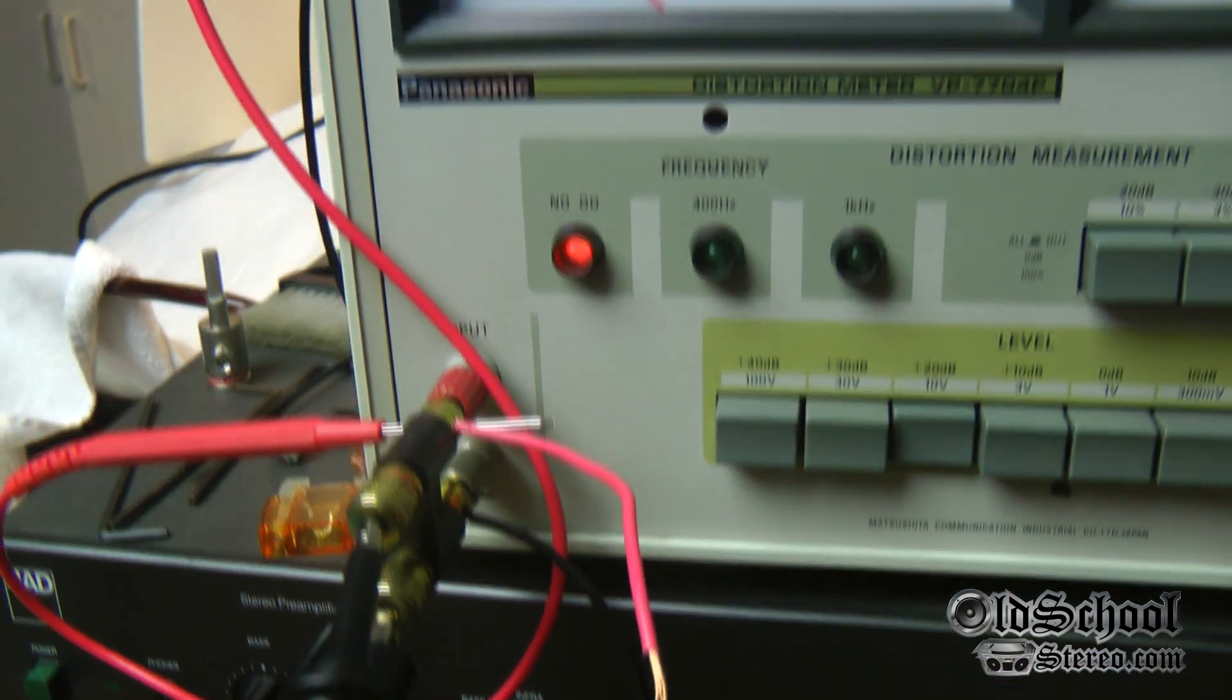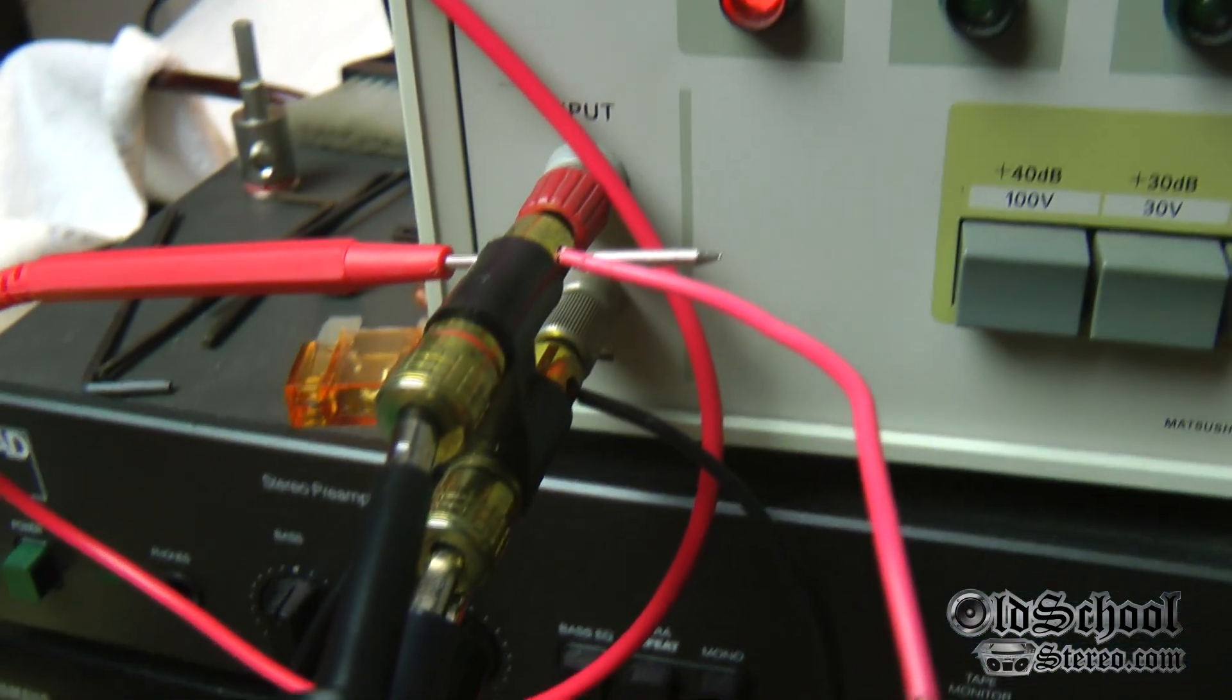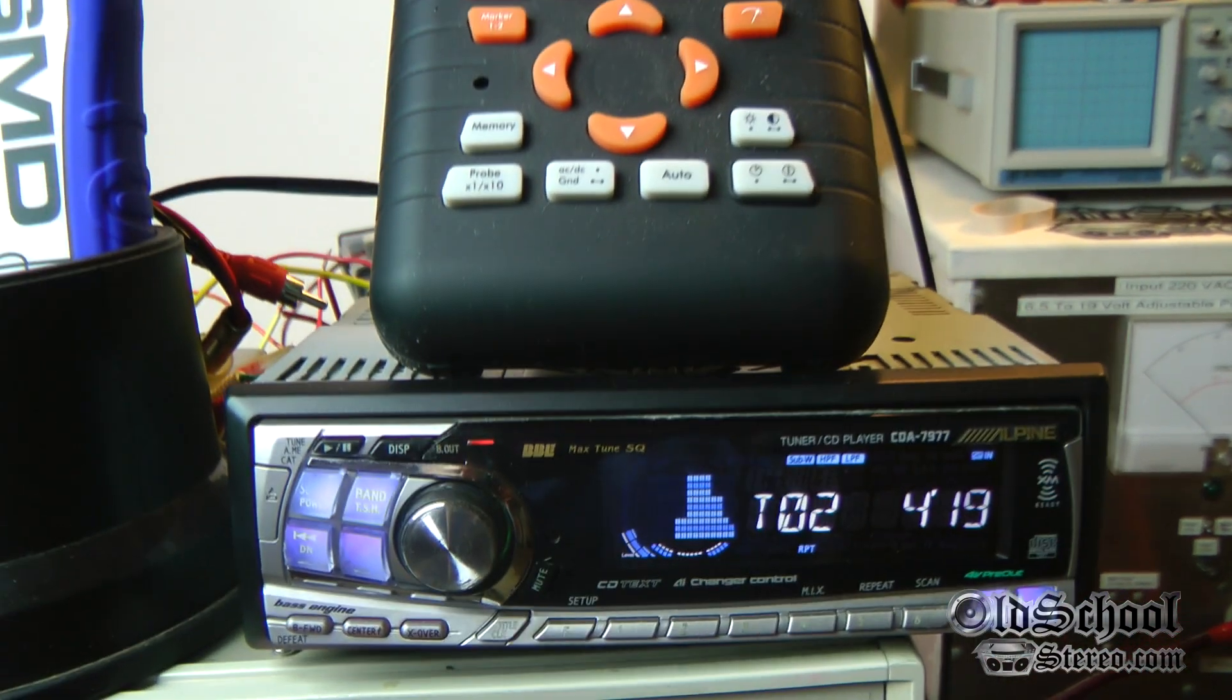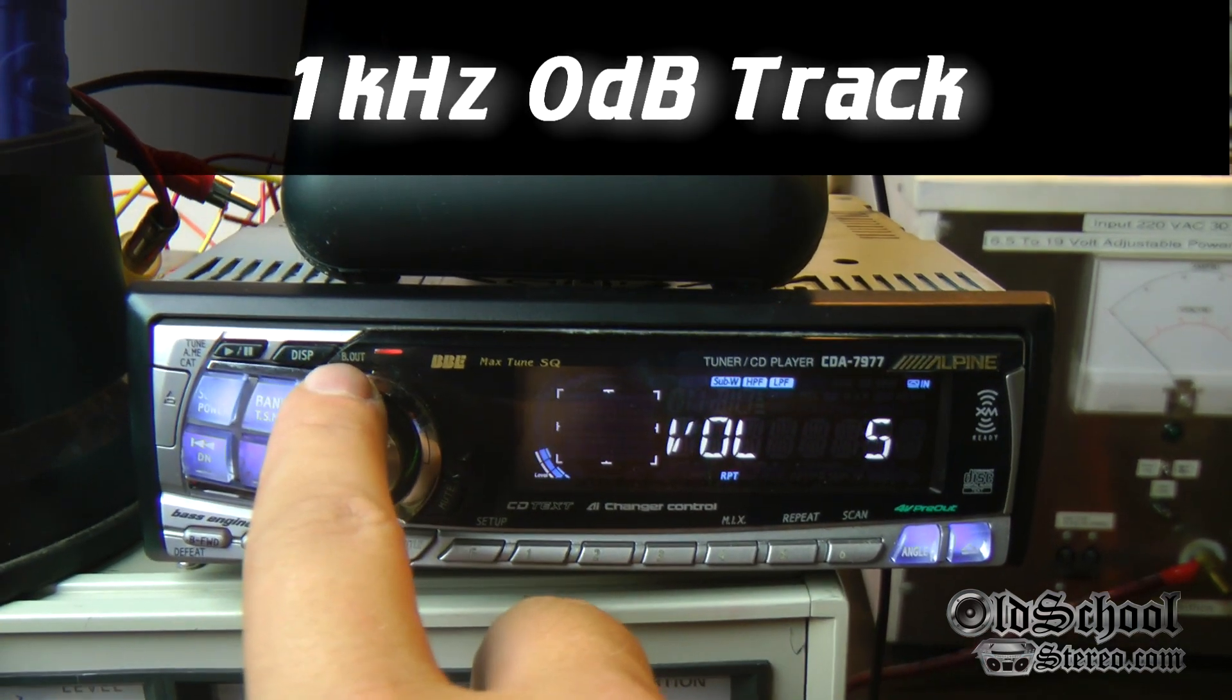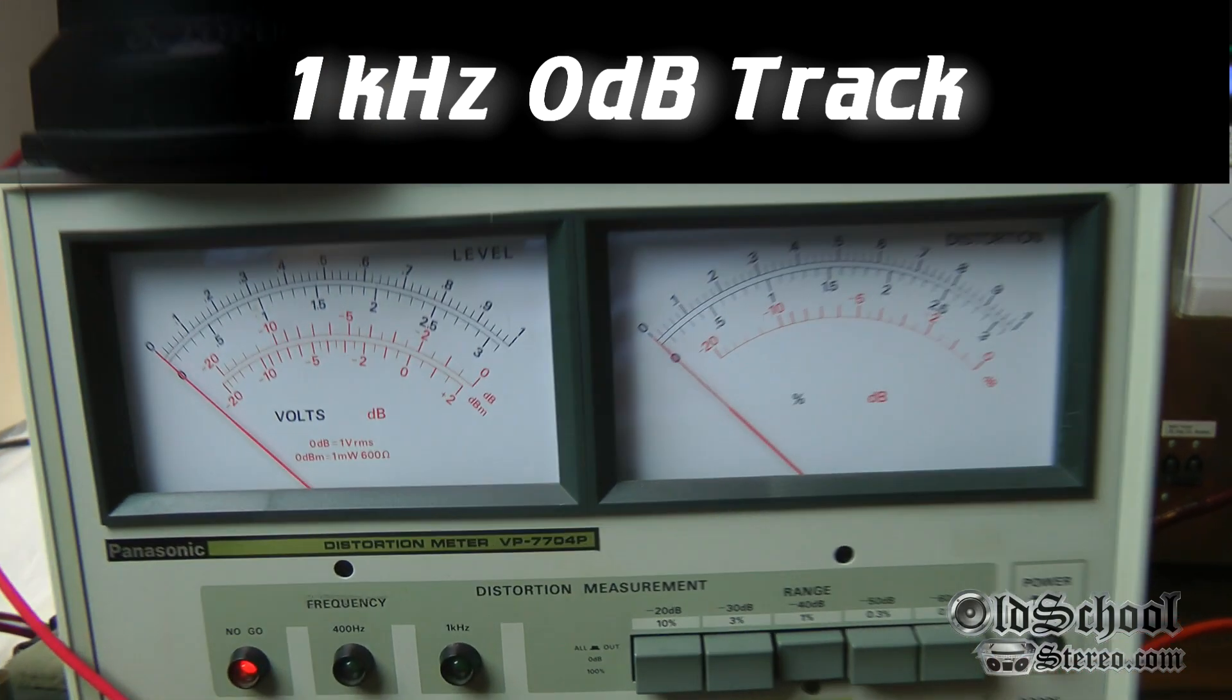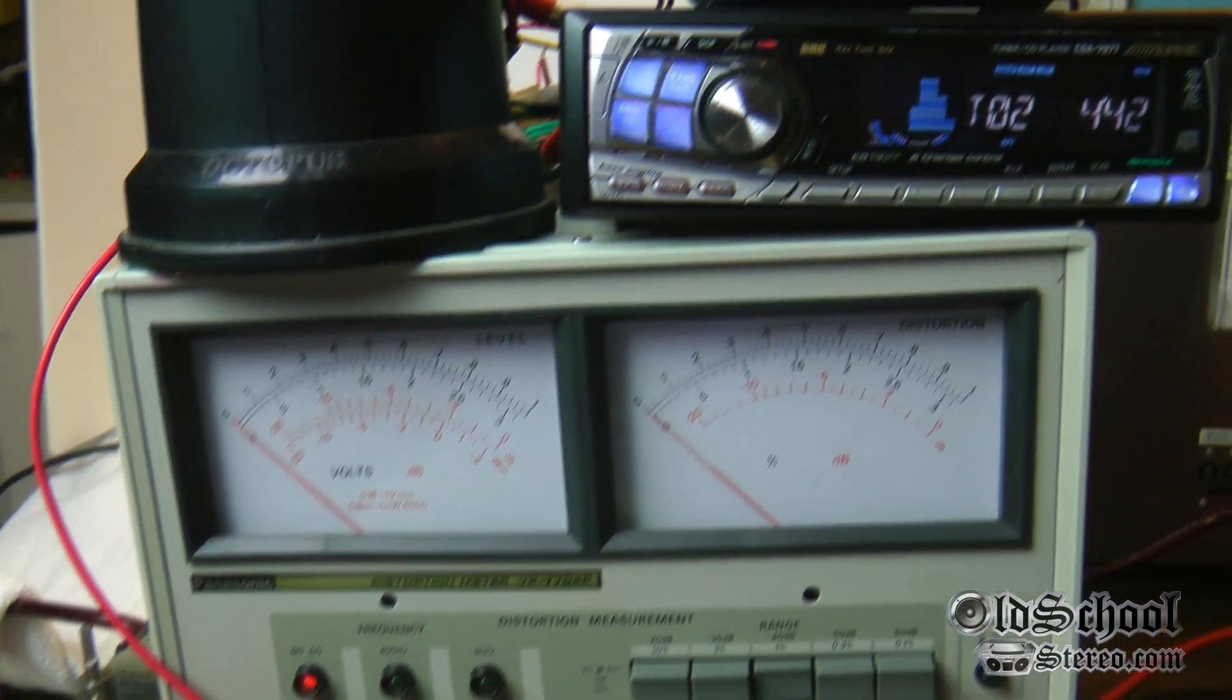Real quick, just to walk through what I have set up here: I've got the DD1 hooked in directly to the output of the CDA 7977, the front channel, and I also have that same channel going into the input here of the distortion meter. We've got this on track two, this is the DD1 disc, and that is the one kilohertz test tone. The reason we chose that is because this unit detects distortion at 400 Hertz or one kilohertz. Unfortunately it does not do 40.